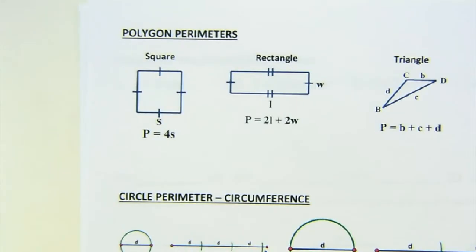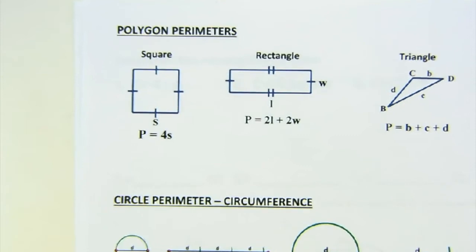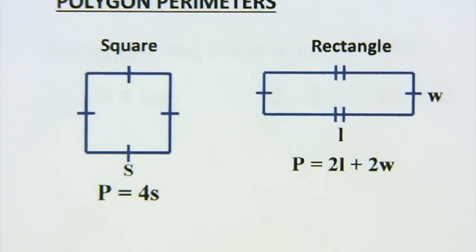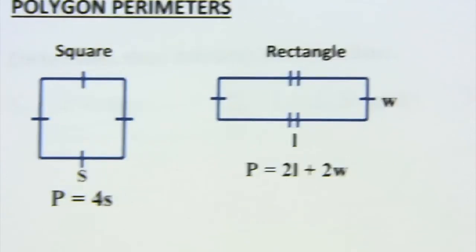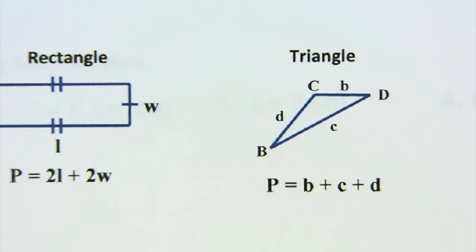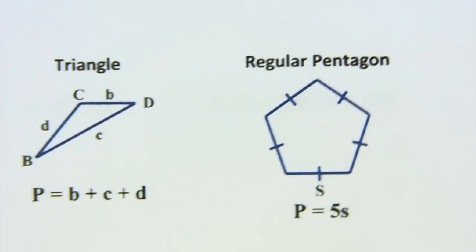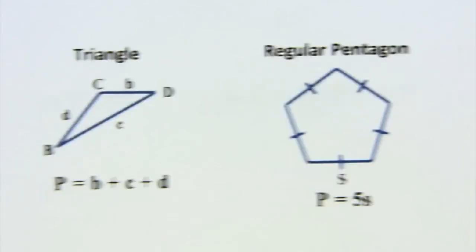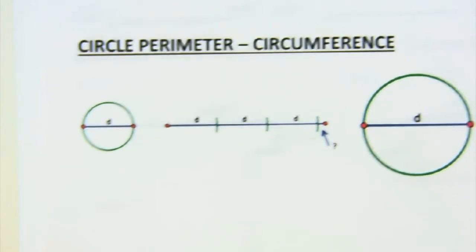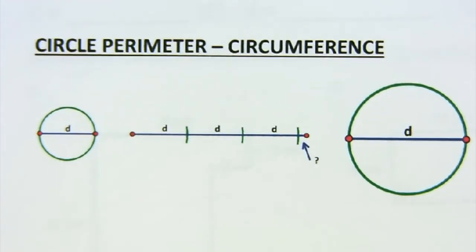Let's look at basic perimeters. A square is just four equal sides; a rectangle has two equal lengths and two equal widths; a triangle, you just add up all of its sides; and any regular polygon — in this case a regular pentagon — has five congruent sides. Those are just basics. The one that's a little more interesting, of course, is a circle, which doesn't have segments.